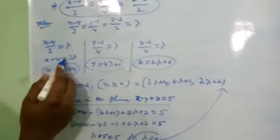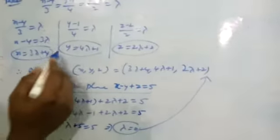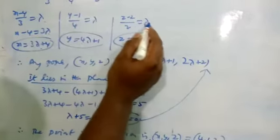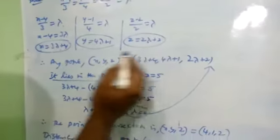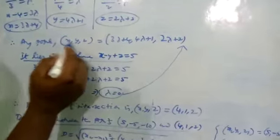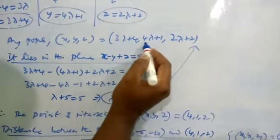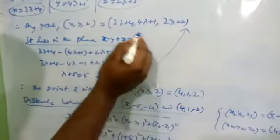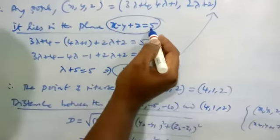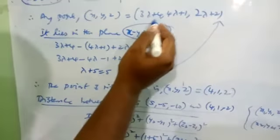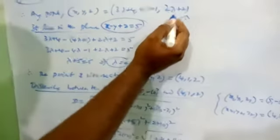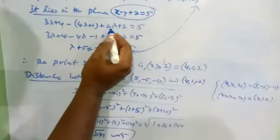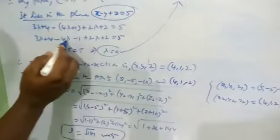Setting equal to lambda: x minus 4 over 3 equals lambda, so x equals 3 lambda plus 4. y minus 1 over 4 equals lambda, so y equals 4 lambda plus 1. z minus 2 over 2 equals lambda, so z equals 2 lambda plus 2. Therefore any point on the line is (3λ+4, 4λ+1, 2λ+2).